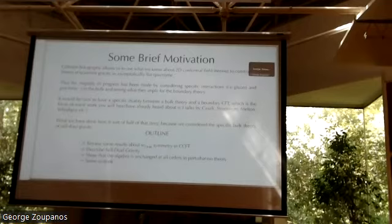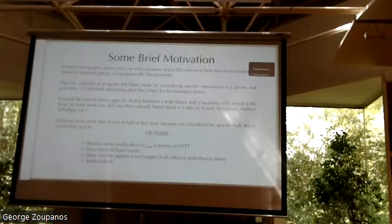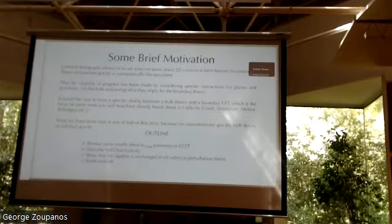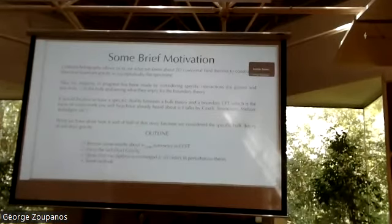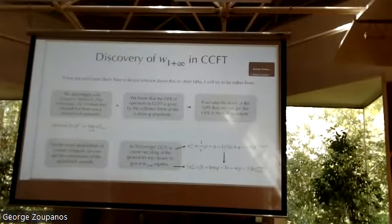I will first review some of the results of this W1+∞ symmetry that appears in celestial CFT, which you've heard a little about. Then I'll talk about some of the nice properties of self-dual gravity and why we chose to study it. Then I'll describe what we did to show that this W1+∞ algebra is actually unchanged at all orders in perturbation theory if you start from self-dual gravity — which is the main result — and then I'll talk about the implications and outlook.